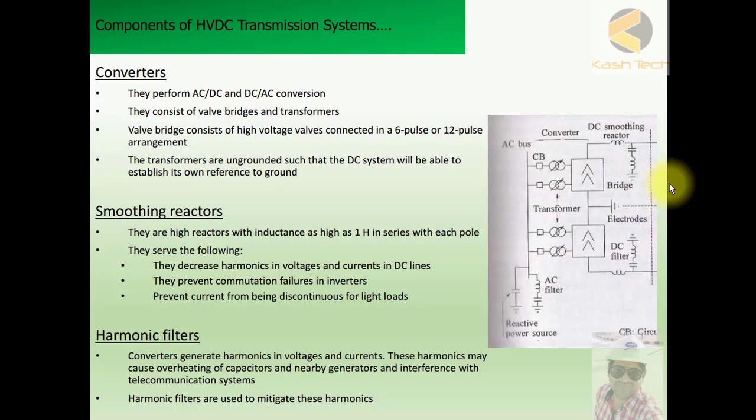Let's continue to study the components of HVDC transmission systems in detail. The first component is the converter. Converters are basically electronic circuitry that converts AC supply to DC for transmission at the sending end, and at the receiving end it converts DC back to AC for utilization and transmission at the receiving end.